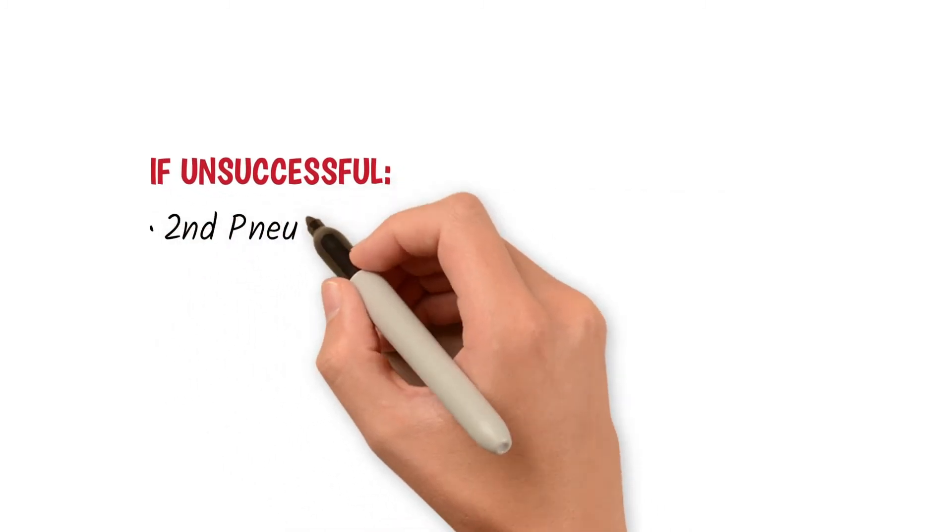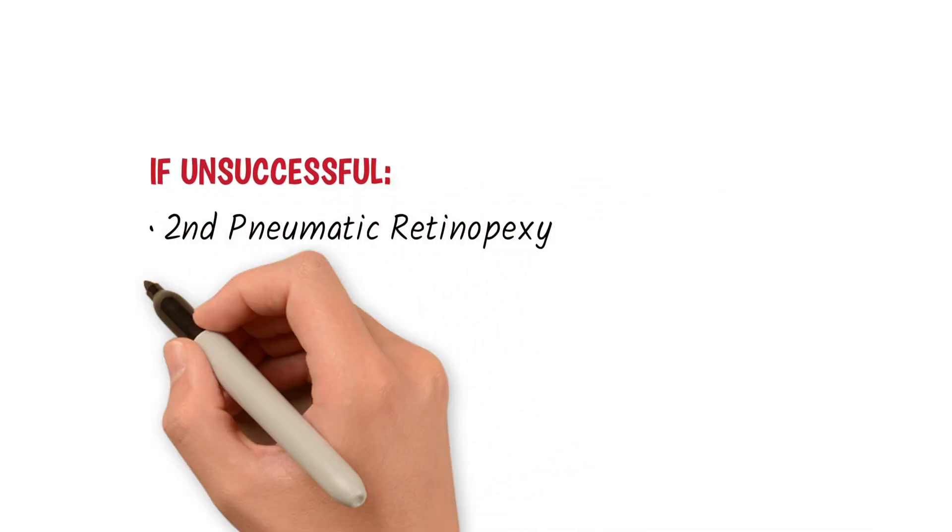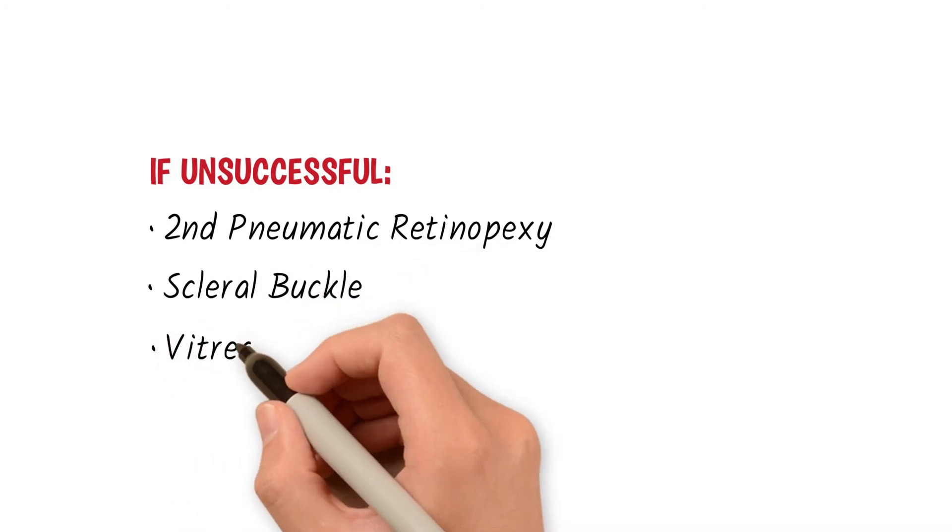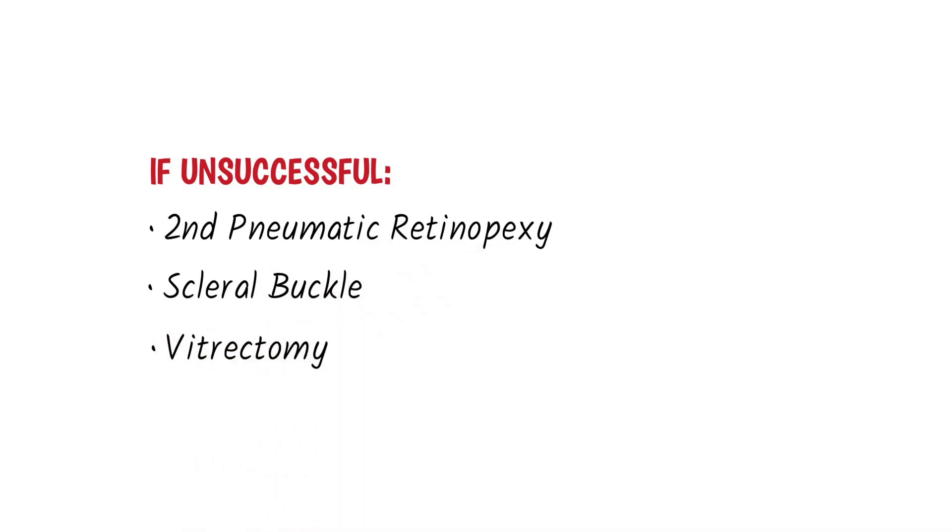If this procedure is unsuccessful, a second pneumatic retinopexy or another method to repair the retinal detachment, such as scleral buckle or pars plana vitrectomy, will be recommended.